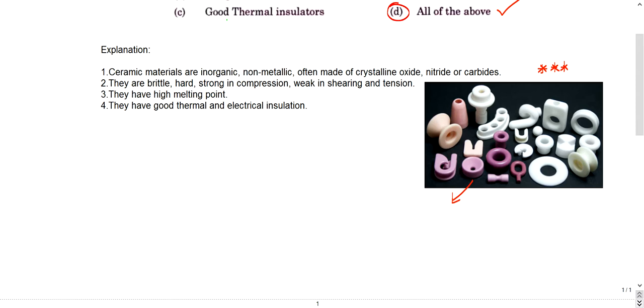Ceramic materials are inorganic, they are non-metallic. You can see and relate, that's why I inserted this image. They are crystalline oxides, nitrides, and carbides. They are made up of crystalline oxides, nitrates, or carbides.